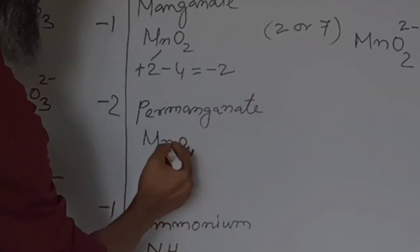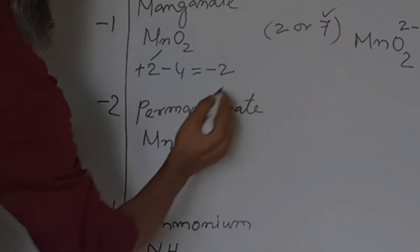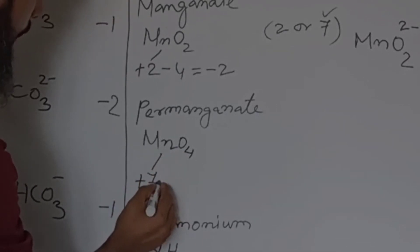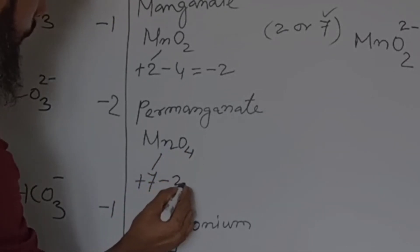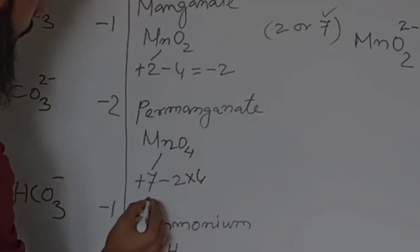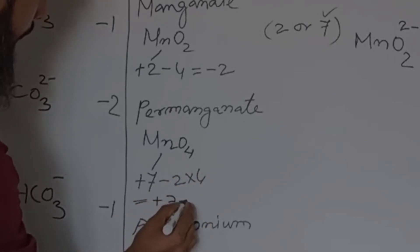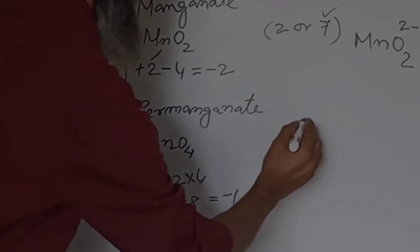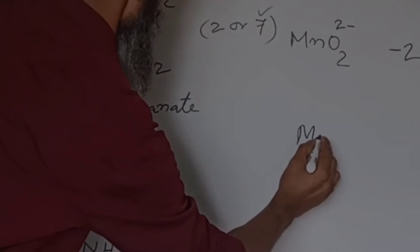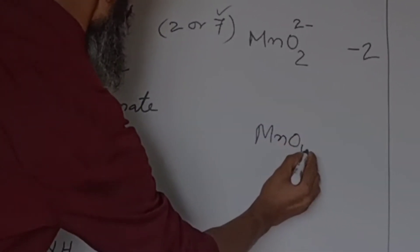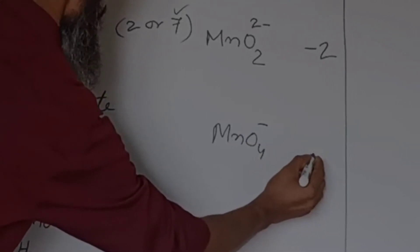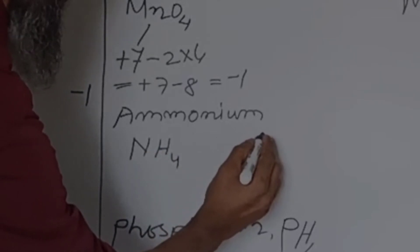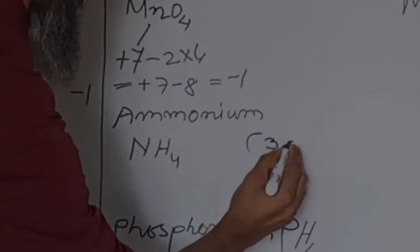Now let's come to permanganate. Here we are going to select valency of manganese as 7. It is electropositive, oxygen is electronegative with valency 2. Four atoms of oxygen give 2 times 4 equals 8. So plus 7 minus 8 gives valency minus 1. Its symbol is MnO4 1-minus.